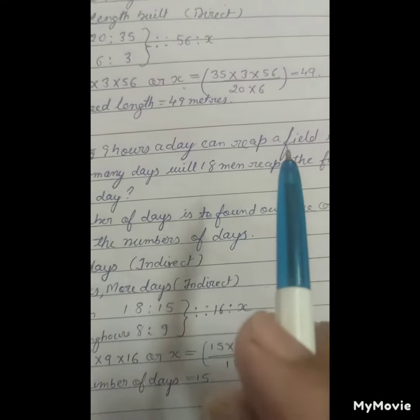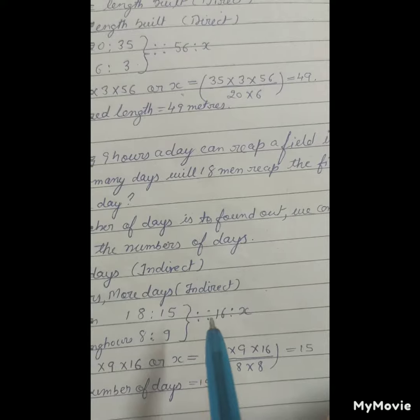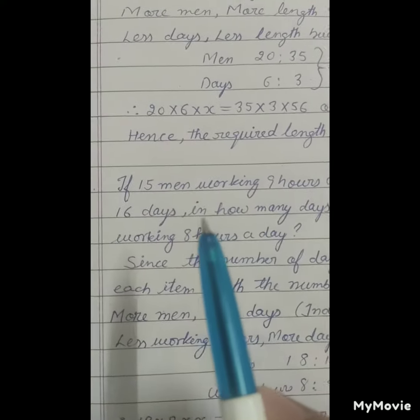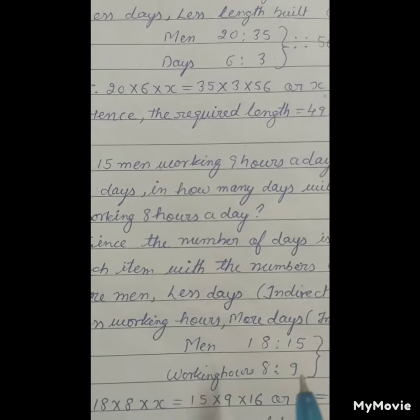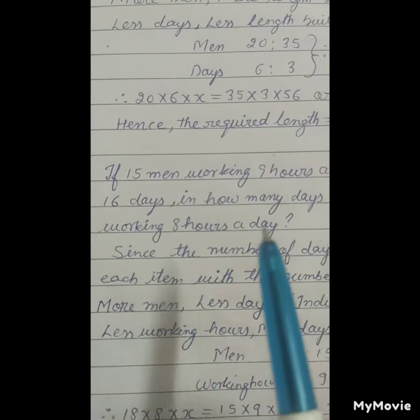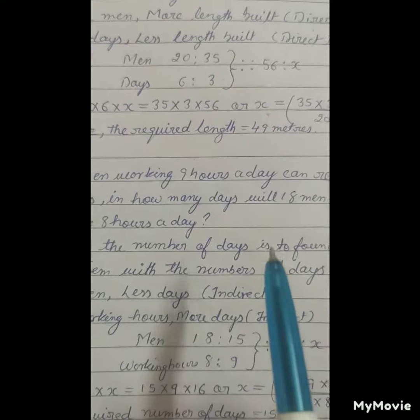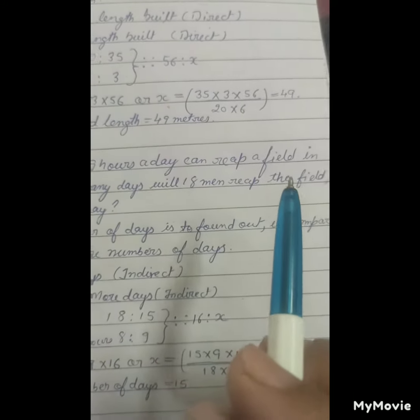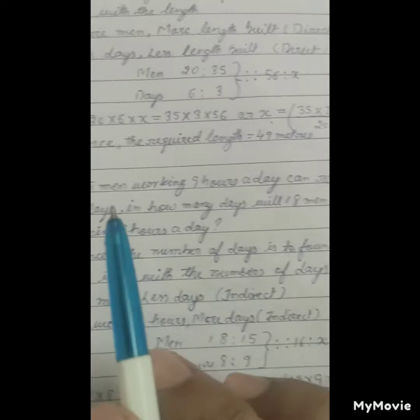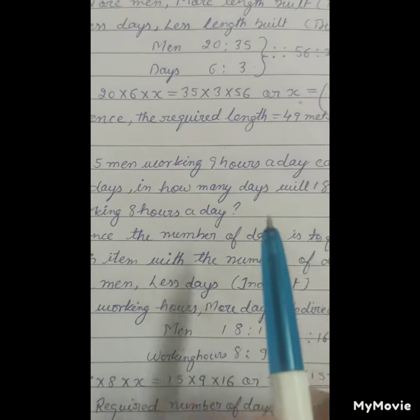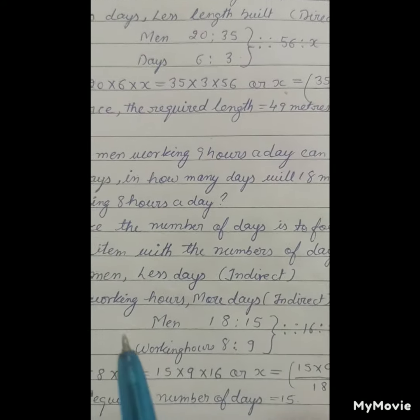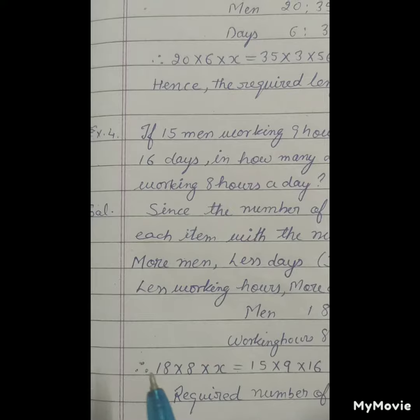So that is equal to ratios of 16 in the first case to X in the second case. X is to find out in the second case.